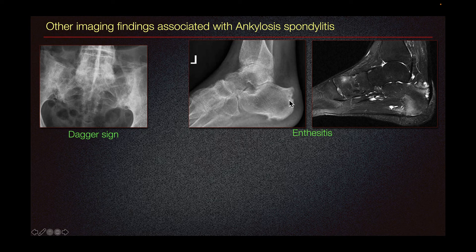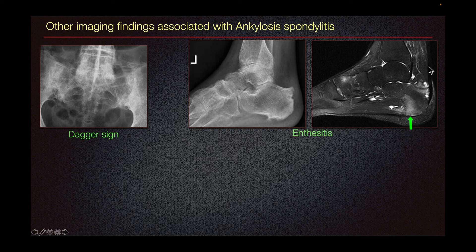Here we can see enthesitis at the attachment of the Achilles tendon and also at the plantar fascia. On MRI of this patient, we can see bone marrow edema both at the attachment of the Achilles tendon and at the plantar fascia attachment.